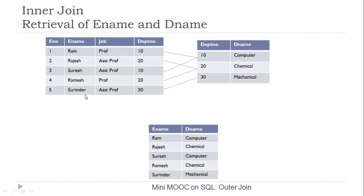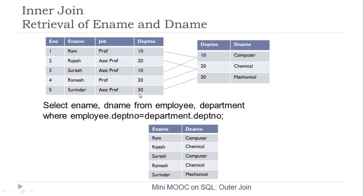Welcome to this video tutorial on outer join. In this session we will learn the need for outer join and different types of outer join. In the previous session we retrieved ename and dename from the employee and department table using equi join, joining both tables on their common column department number. The statement is: SELECT ename, dename FROM employee, department WHERE employee.department_number = department.department_number, prefixing the table name to remove ambiguity.